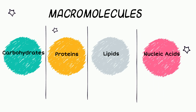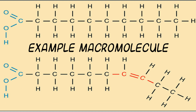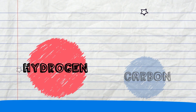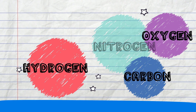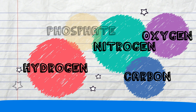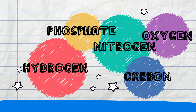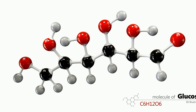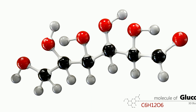A macromolecule is a large molecule formed when elements and molecules bond together. Elements like hydrogen, carbon, oxygen, nitrogen, and phosphate join together to make up a macromolecule. Each macromolecule is unique and made up of many smaller molecules.